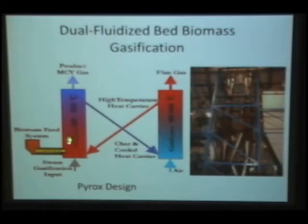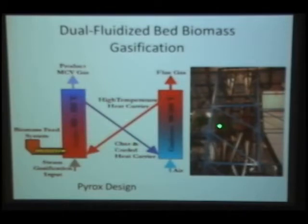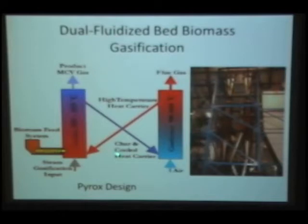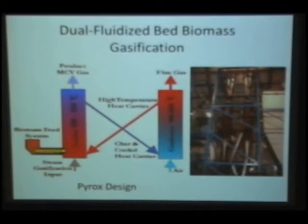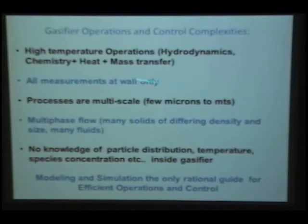The difficulties with these processes are: they are high-temperature operations, both units above 850 to 900 degrees centigrade; you cannot see anything through the reactor, so all measurements that can be made are at the wall only; the flow is multi-phase; and the flow is multi-scale — chemistry happens at the particle level while flow happens at the bed level, which is 30 feet high, so the scale ranges from one micron to about 10 meters. There is also hydrodynamics, chemistry, and heat and mass transfer to account for.